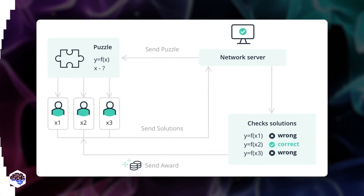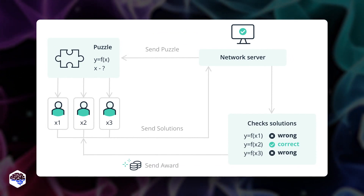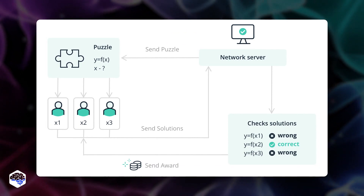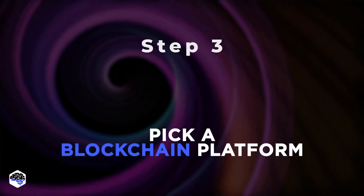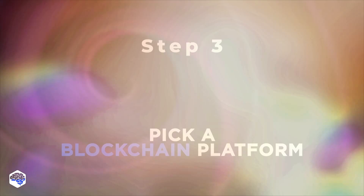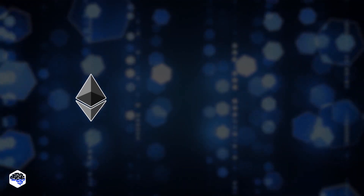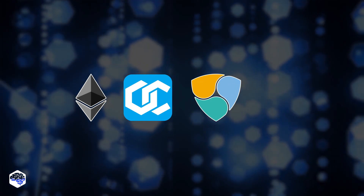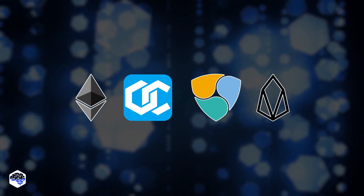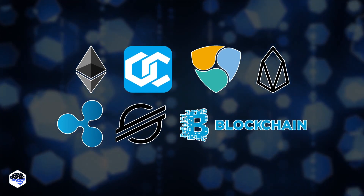We consider the proof-of-work scheme the best method for reaching a consensus agreement between participating nodes. With POW, miners compete against each other to complete transactions on the network and get rewarded. Then, pick a blockchain platform. Among the top blockchain platforms available today, we have selected Ethereum, OpenChain, NEM, EOS, Ripple, Stellar, and IBM Blockchain.